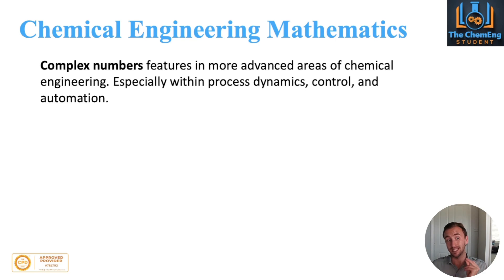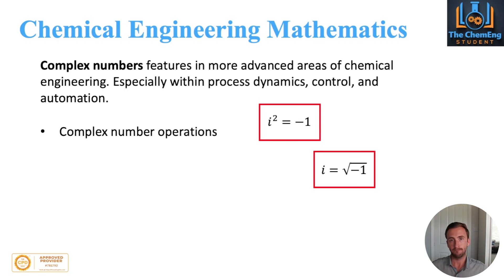Now, the next chemical engineering specific topics are complex numbers, because they feature in the more advanced areas of chemical engineering, especially within process dynamics, control, and automation. I teach a fourth year honours degree level module in process dynamics and control, and complex numbers feature a lot in the response of certain disturbances within chemical reactors. The things that you will need are complex number operations - the identification of the nomenclature. You know what i² is, and you know what i is, in the context of -1 and the square root of -1.